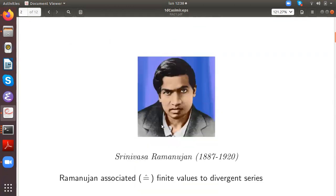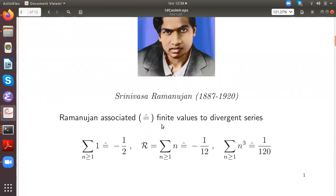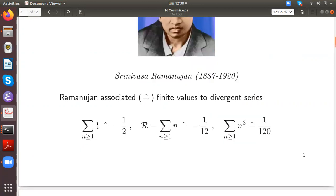This is Ramanujan and among his achievements was also that he associated finite values to divergent series, which look very strange. So if you just sum the number one, he says this gives minus one-half. The most famous example is summing one plus two plus three plus four and so on. He says this is minus a twelfth and if you sum the cube numbers, one over 120.